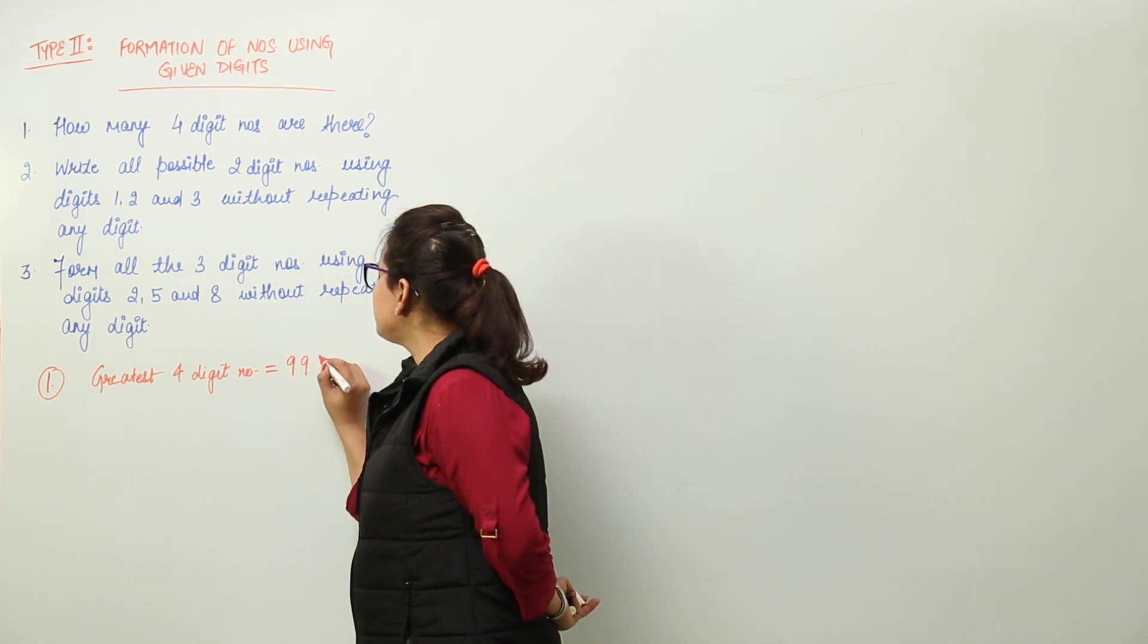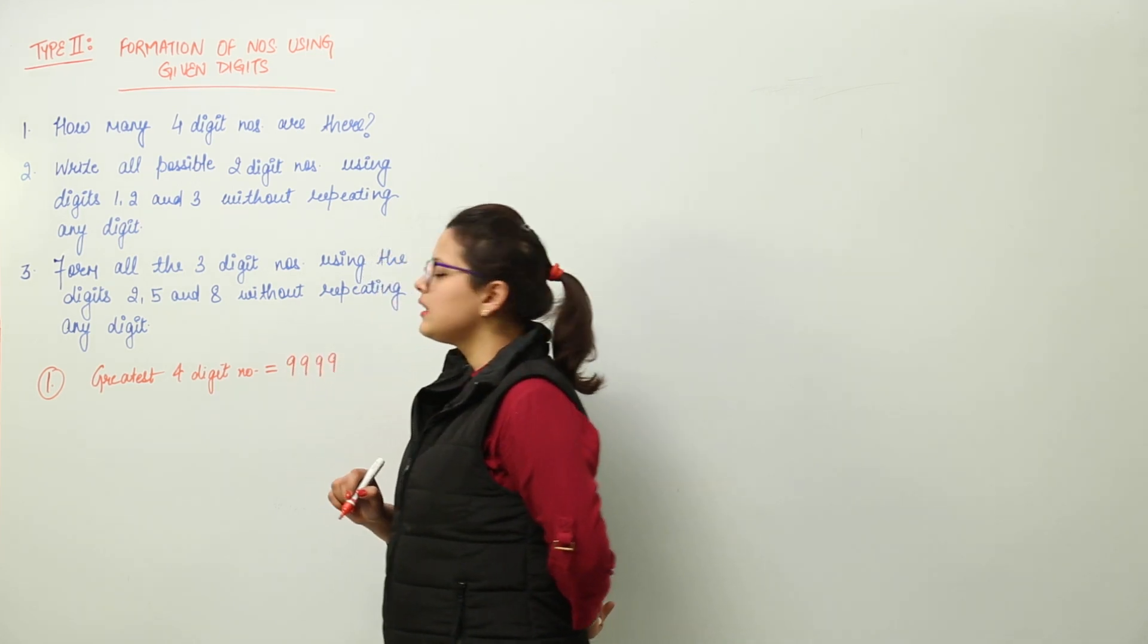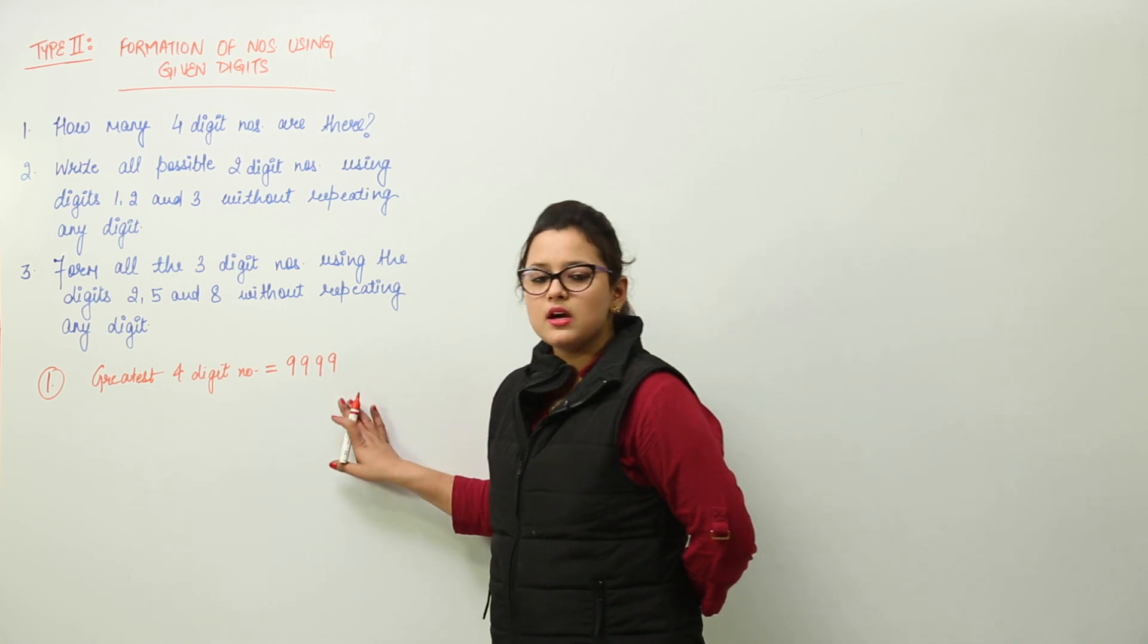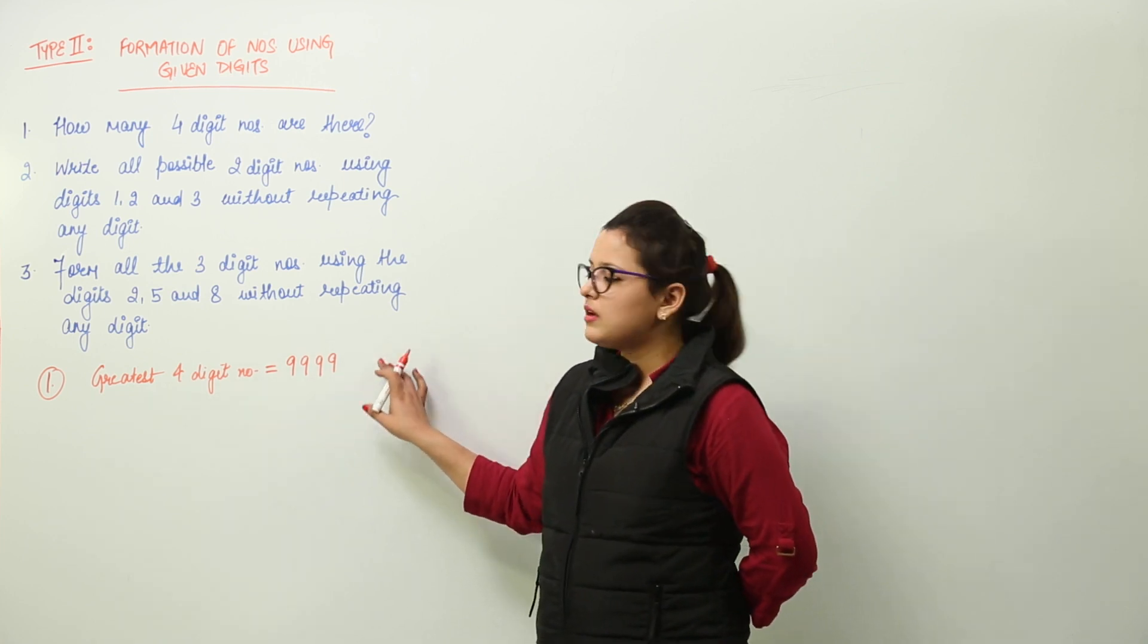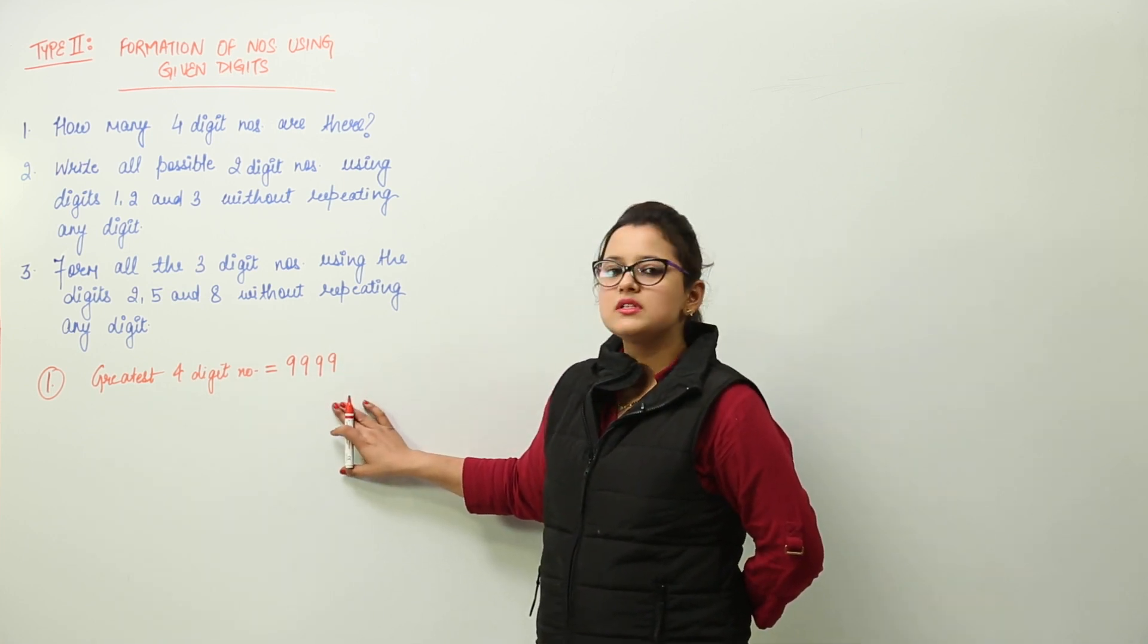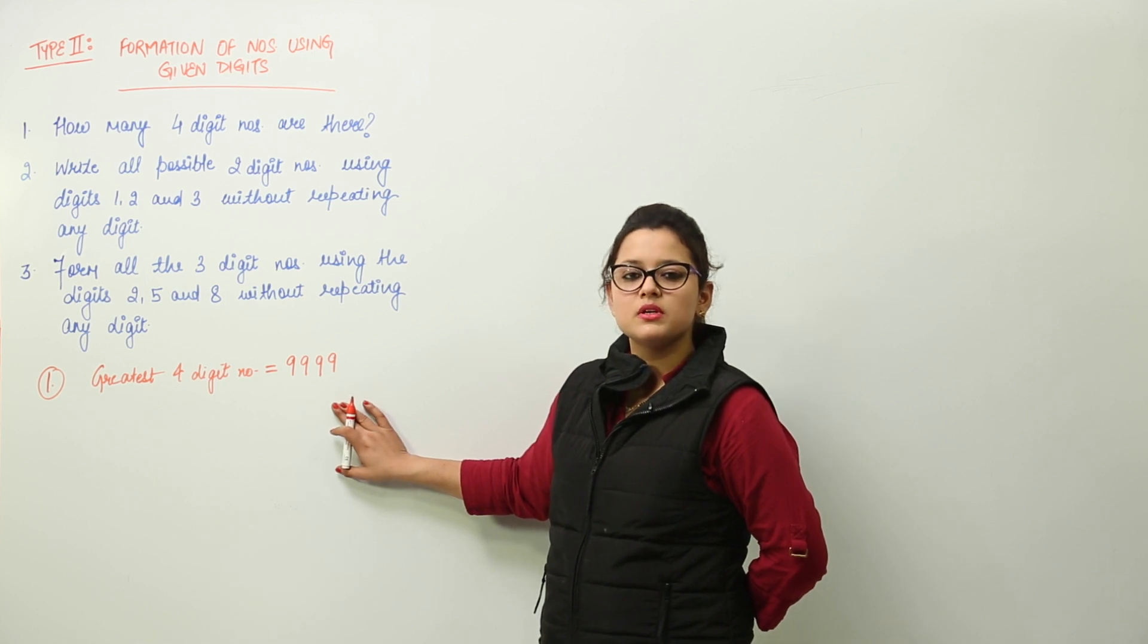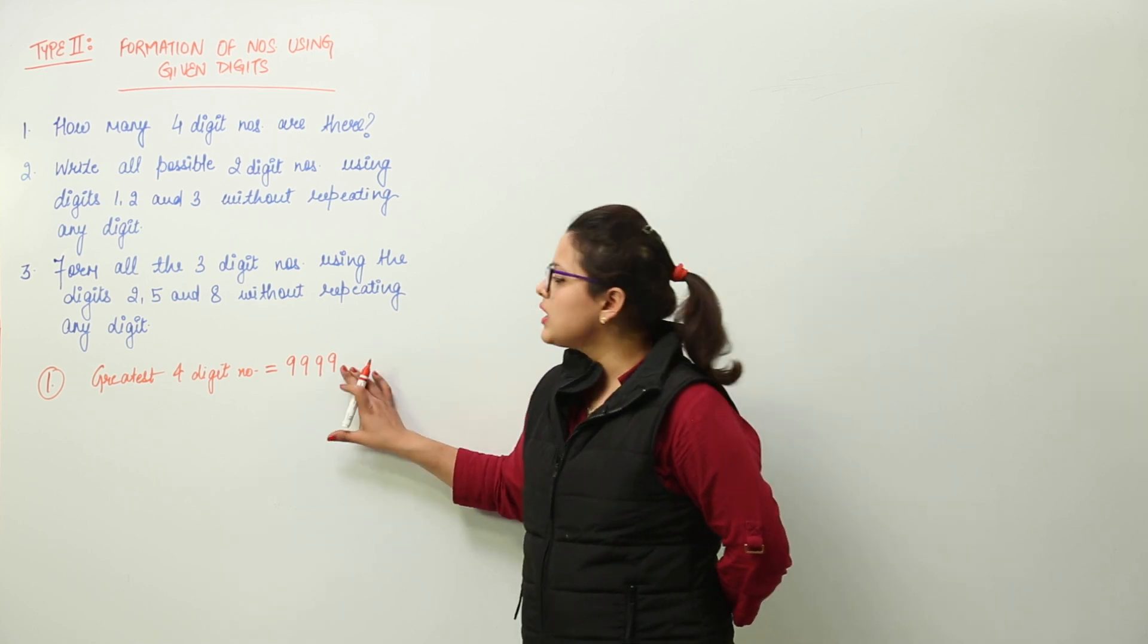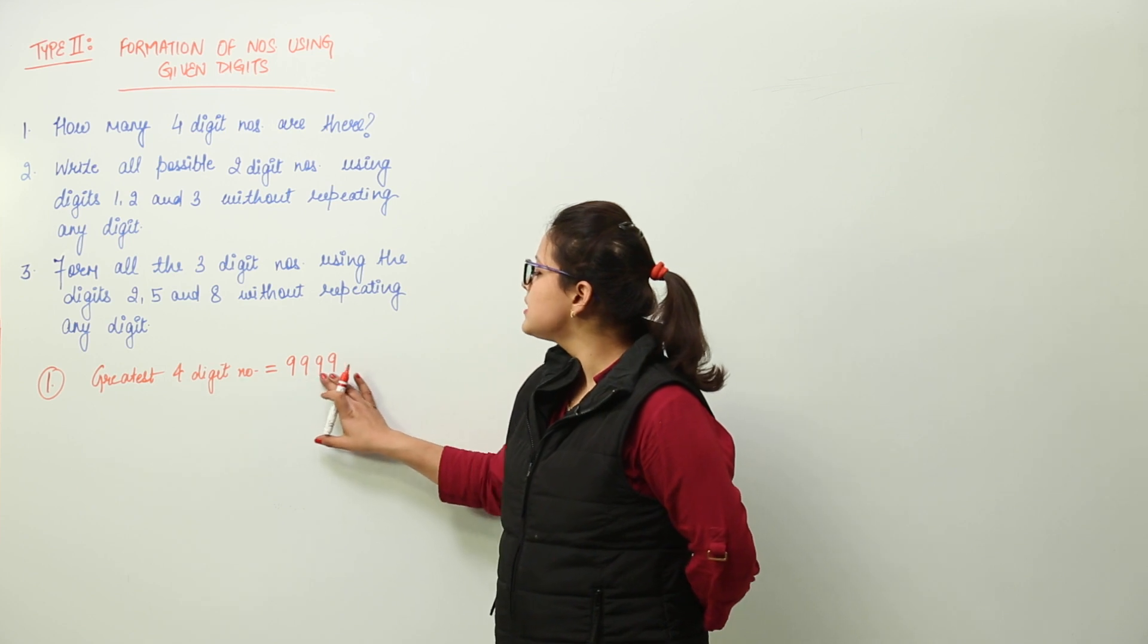The greatest four-digit number we know is 9999, because one number after this becomes 10000, which is a five-digit number. So we have the greatest four-digit number.